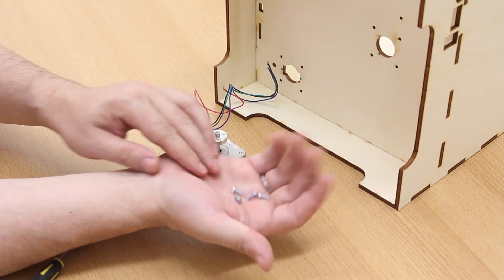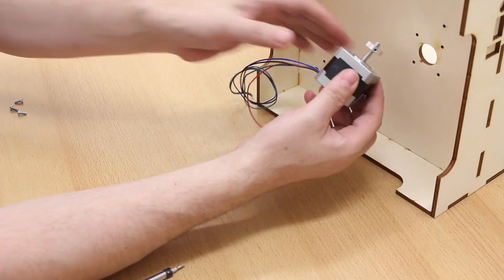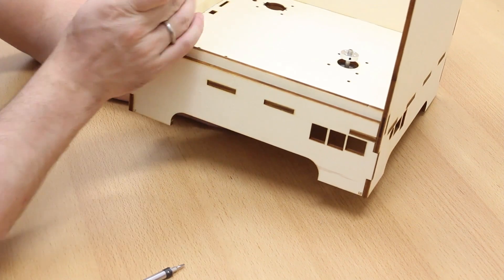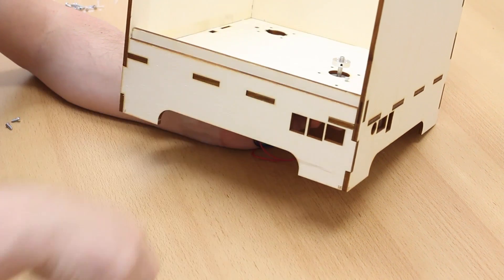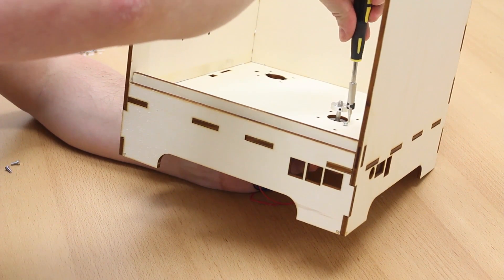And then please take four screws for mounting the motor to the motor hole. This is the one on the right side of the housing of the base plate. And use the four screws for mounting it.